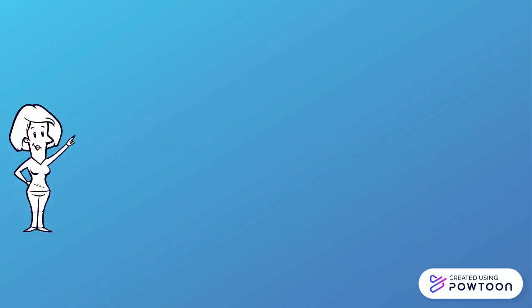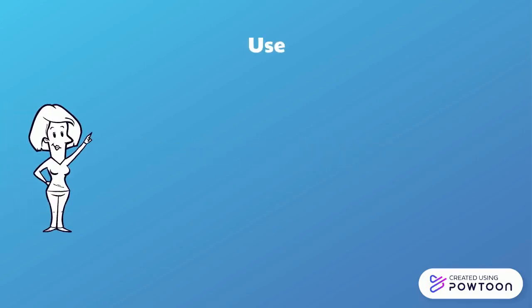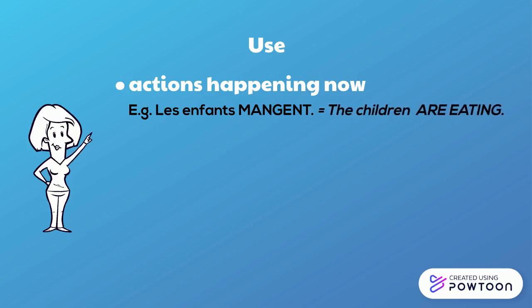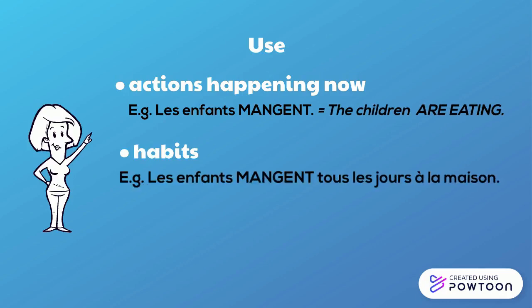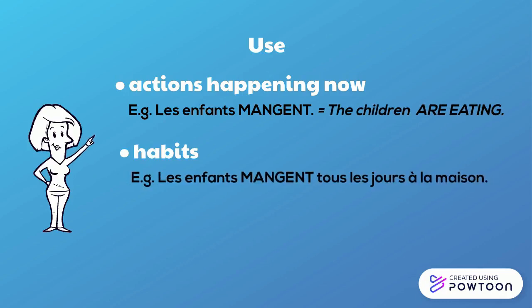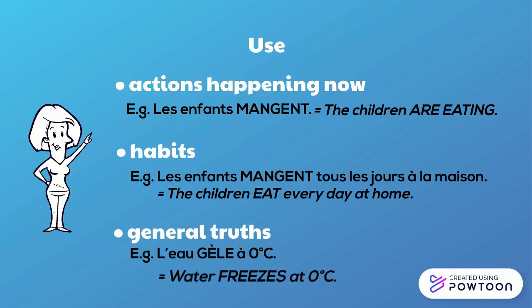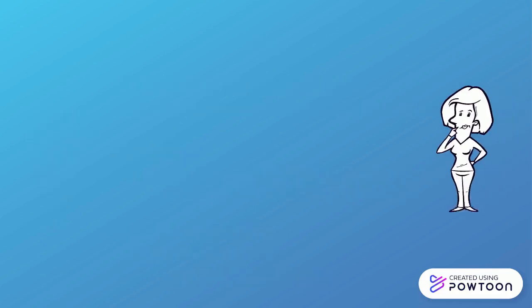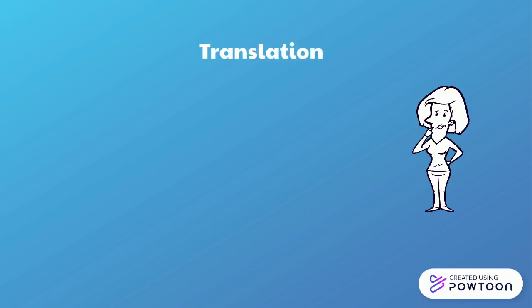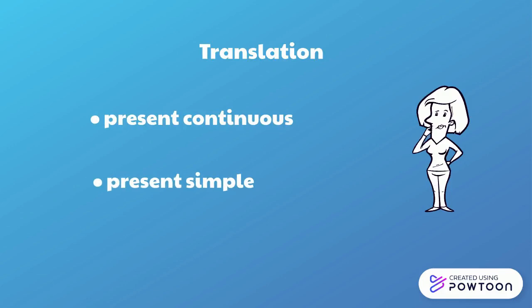The present indicative. This tense is used when talking about actions that are happening now. For instance, 'les enfants mangent' — the children are eating. It can express habits: 'les enfants mangent tous les jours à la maison' — the children eat every day at home. Or general truths: 'l'eau gèle à 0 degrés' — water freezes at 0 degrees. The French present is translated into English either by the present continuous or the present simple.